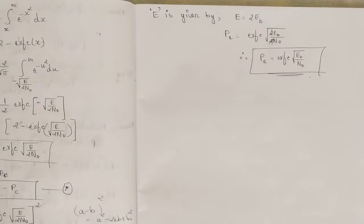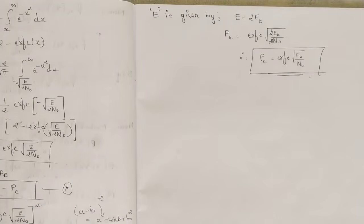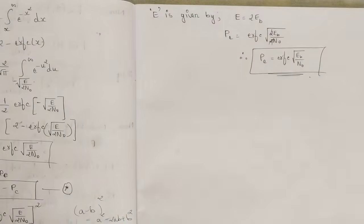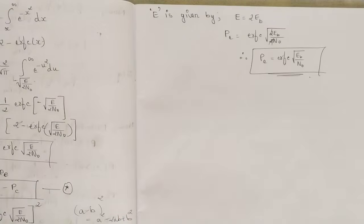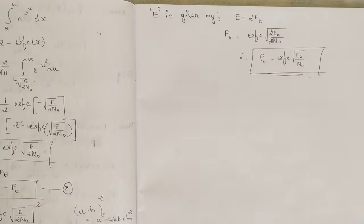This is the complete step-by-step procedure for calculating the error probability of the QPSK method. This is a very important question, so please note it down — there are high chances it may be asked. In the next video we will be discussing differential phase shift keying, binary frequency shift keying (BFSK) using coherent and non-coherent detection, before moving on to Module 3. Stay tuned!